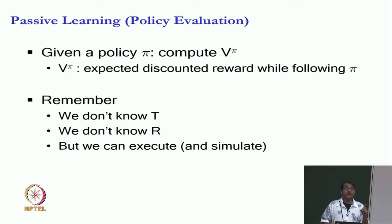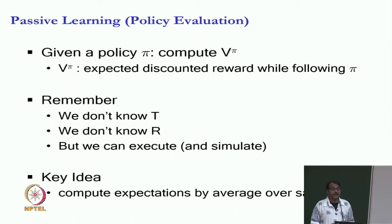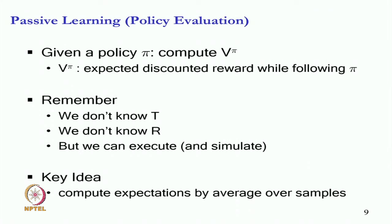And of course, remember we do not know transition function, we do not know reward function, but we can execute the policy and simulate and let us assume we are in a weak simulator world. So we want to solve the general problem. And the key idea that you will learn today is to compute expectation by taking average over samples. That is it.